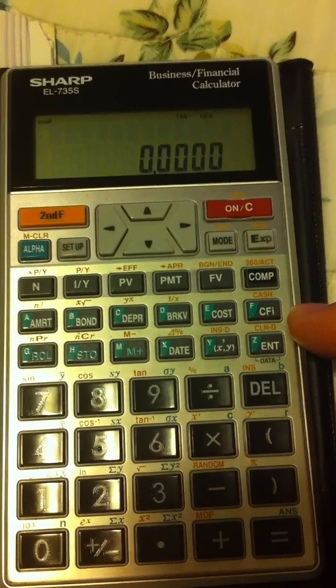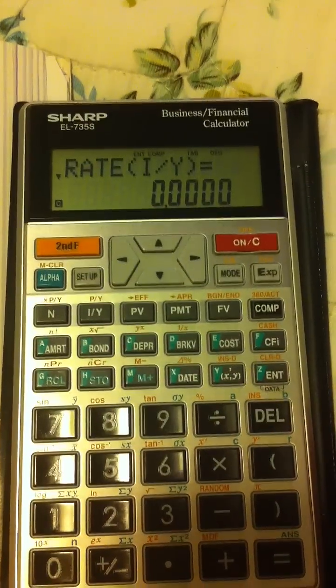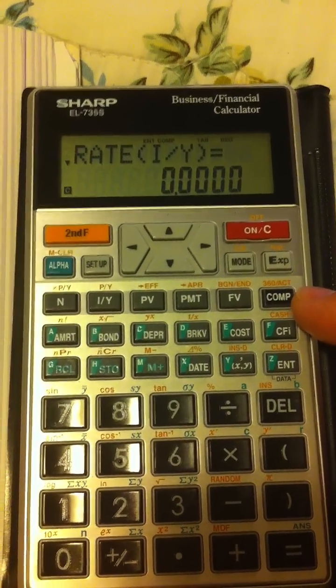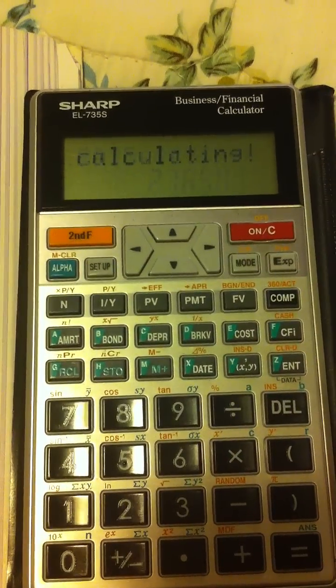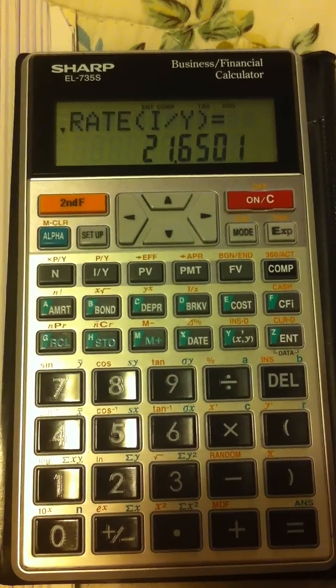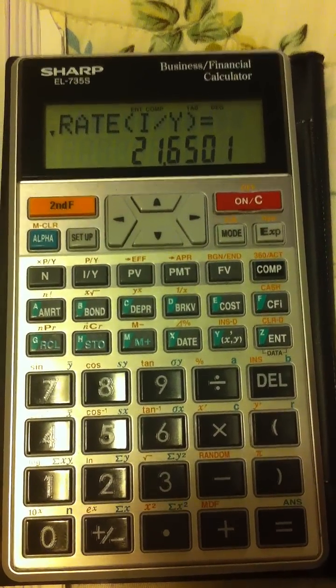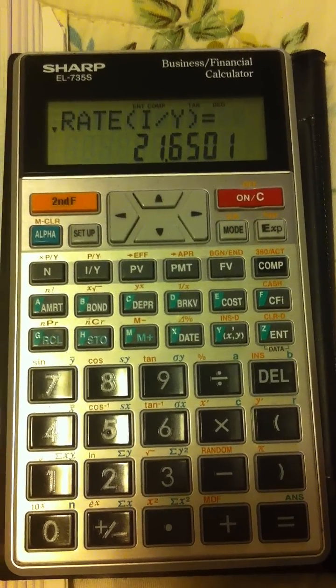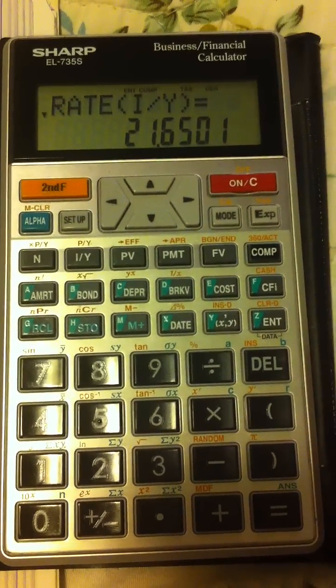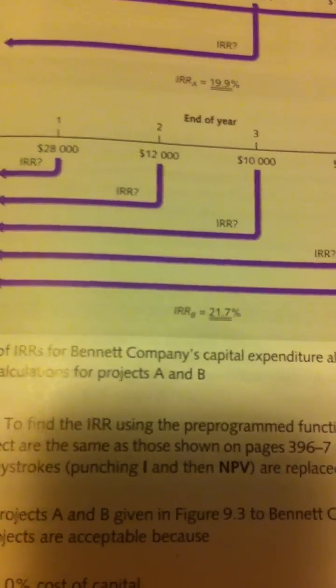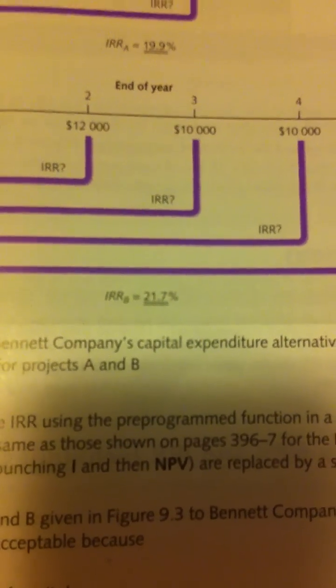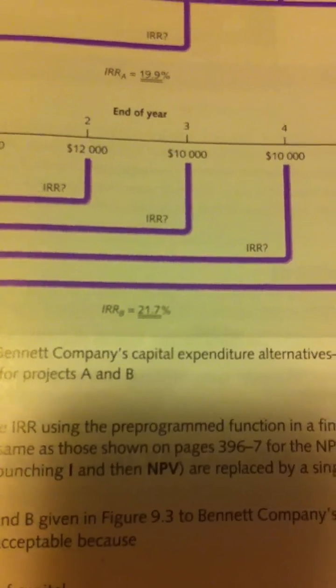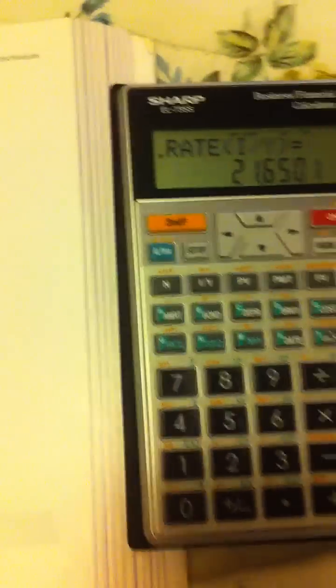After this, you can just compute your IRR, so press COMP. You see here 21.65% as your IRR for project B. You can round it up to make it 21.7% and you can match your answer with the book answer. You can see here project B IRR is 21.7%.